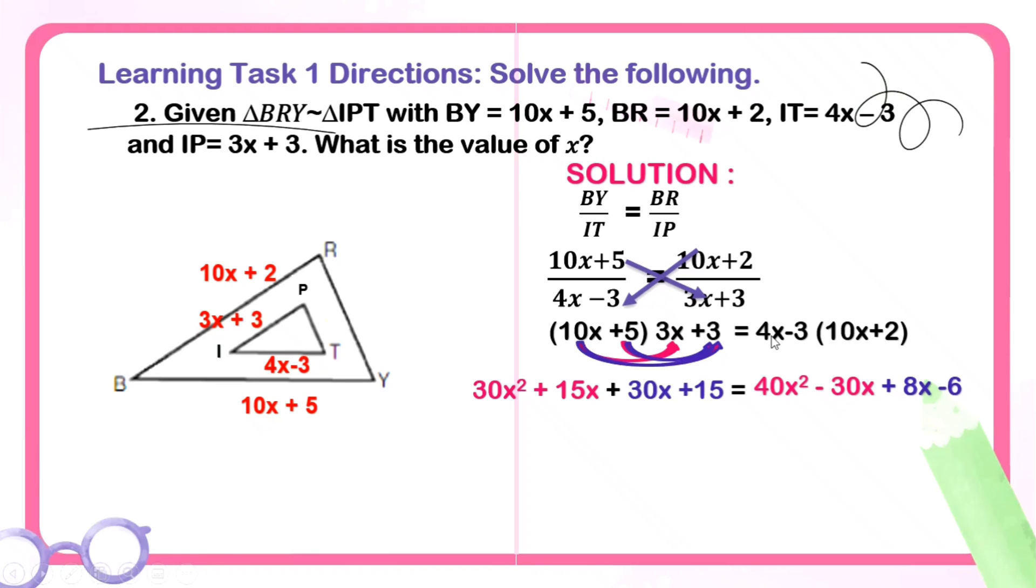We'll do the same on the other side. 4x times 10x, then negative 3 times 10x. Next, use the 2. 4x times 2 and negative 3 times 2. So we have 40x squared minus 30x plus 8x minus 6. 4x times 10x is 40x squared. Negative 3 times 10x is negative 30x. 4x times 2 is 8x. And negative 3 times 2 is negative 6. Then, we can simplify the similar terms. Like 15x and 30x, you can add them. 15 plus 30 is 45. So we have 30x squared plus 45x plus 15.